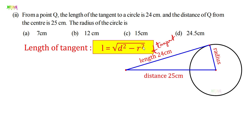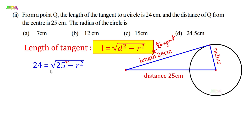Here d = 25 centimeters and L = 24 centimeters. Substituting: 24 = √(25² − r²). Squaring both sides — transpose the square root to the left side — gives 24² = 25² − r². So 24² = 25² − r².